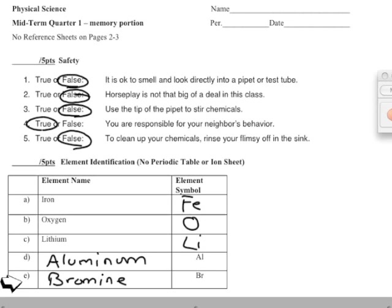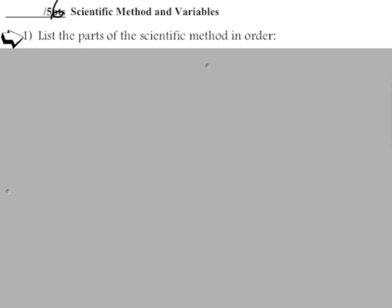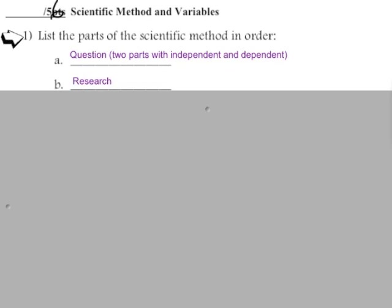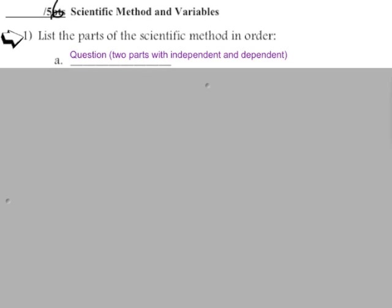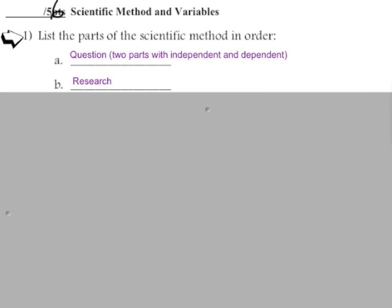The next section is scientific method and variables. You need to memorize the steps to the scientific method. The first step is question — you have to write it as two parts, identifying the independent and dependent variable. Make sure not to make it an if-then statement, that's for the hypothesis. Next is research, where you gather any information on the experiment from prior work or past experiences.